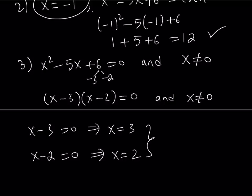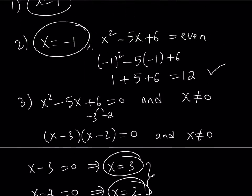And notice that none of these values are equal to 0. Therefore, they are valid solutions as well, because they don't make the base 0. So x equals 3 is a possible solution. x equals 2 is also a possible solution.